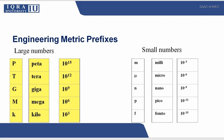Large numbers are represented as I showed you in the previous slide. Kilo is 10 raised to power 3, then we have mega 10 raised to power 6, then we have giga 10 raised to power 9, tera 10 raised to power 12, and peta 10 raised to power 15. And for small numbers, milli is 10 raised to power minus 3, micro is 10 raised to power minus 6, nano is 10 raised to power minus 9, pico is 10 raised to power minus 12, and femto is 10 raised to power minus 15.